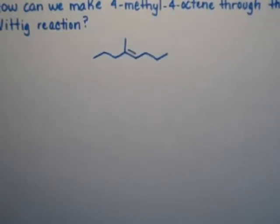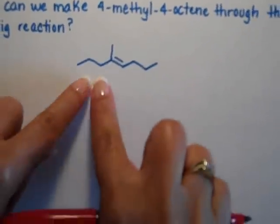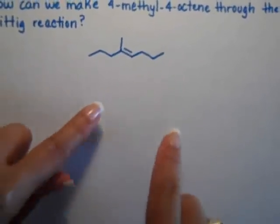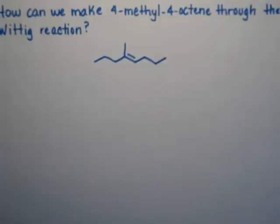This problem is a twist on the Wittig reaction because they give me the alkene and I have to decide which one is going to be the ketone, which one is going to be the ylide that we're going to use.